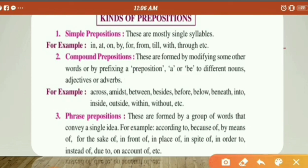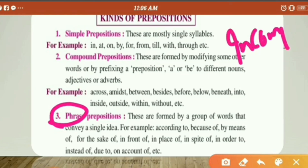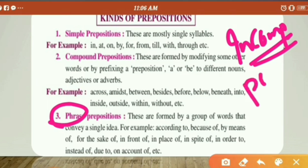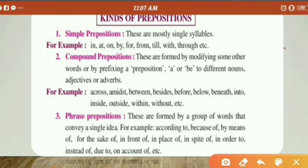The third type is phrase prepositions. A phrase is an incomplete sentence with partial information — not a full sentence, but a group of words conveying a single idea. Examples include: according to, because of, by means of, for the sake of, in front of, in place of, in spite of, in order to, etc.